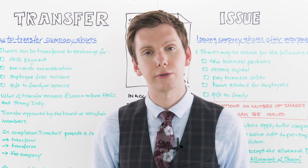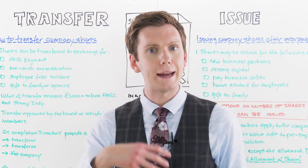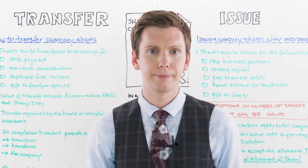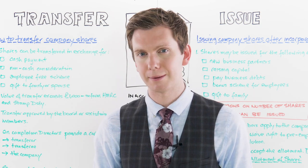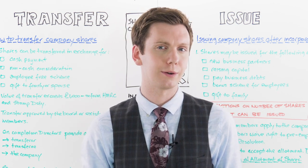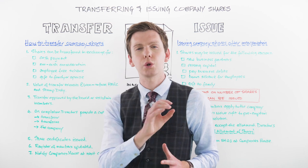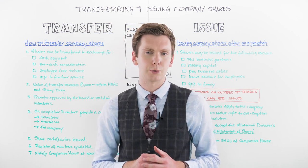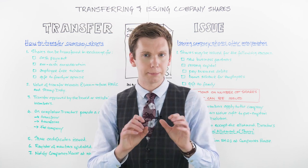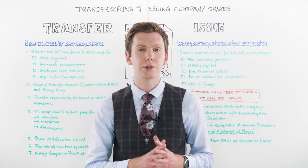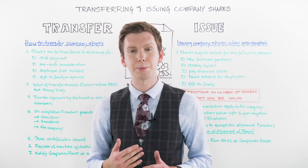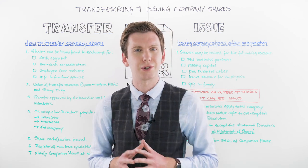The signature of the transferor and transferee is then required, and if there's a stamp duty liability, this should also be included. A completed stock transfer form must be delivered to HMRC if the sale value of the transfer exceeds £1,000. If it does, the transferee will be liable to pay stamp duty tax of 0.5% on that total sale value. The transfer must then be approved by the board of directors either at a meeting or by way of board resolution.